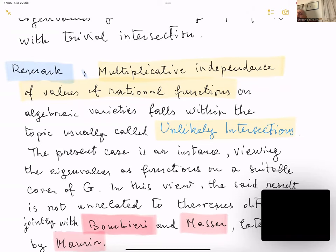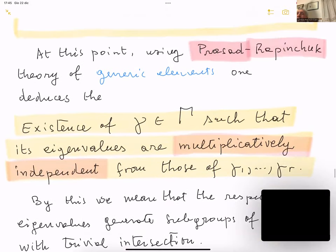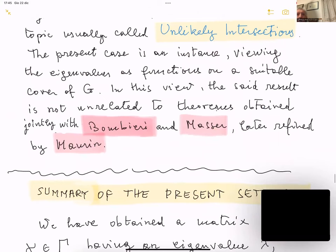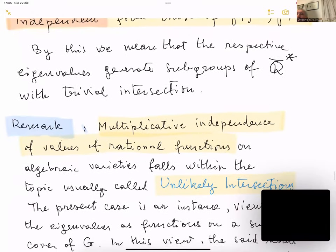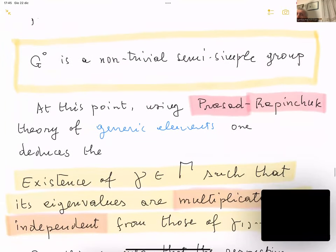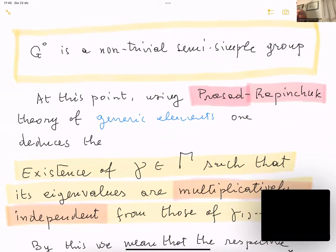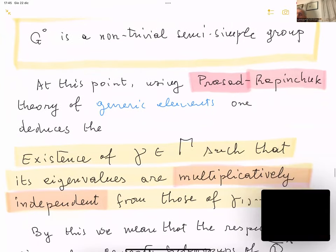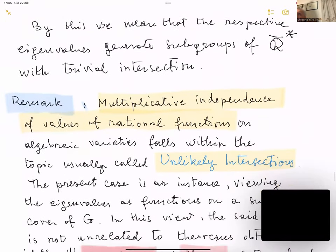In a completely independent context — especially over unlikely intersections — this multiplicative independence of values has been studied. In this view, the result of Prasad-Rapinchuk is not unrelated to theorems obtained jointly with Bombieri and Masser and later refined by Masser and by other authors. There could be a useful and interesting interplay between the theory of Prasad-Rapinchuk and the unlikely intersection theory of multiplicative independence.